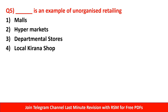Question number 5: Which is an example of unorganized retailing? We discussed two types of retailing: organized retailing (big malls, hypermarkets, departmental stores, D-Mart, Big Bazaar) and unorganized retailing (local vendors, small shops, hawkers and peddlers on the street selling vegetables). The question asks for an example of unorganized retailing — the right answer is local kirana shop.